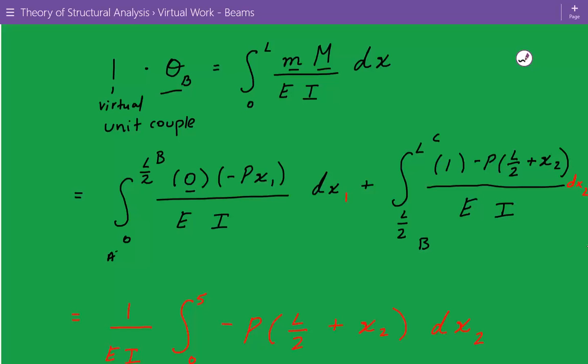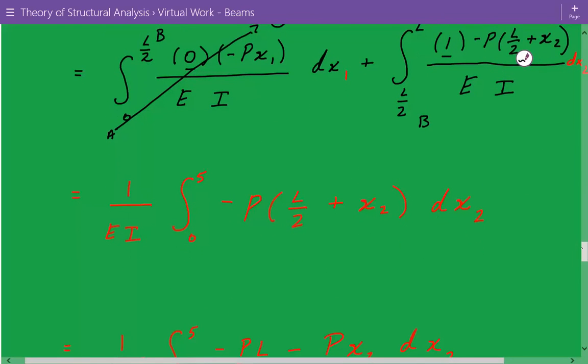So since we have two coordinate systems, we have to divide this integration up into two integrations. One from 0 to L over 2 and then the other one from L over 2 to L. So this is from A to B, and then the second integration is from B to C. So now let's take a look at the terms within the integral. The virtual moment function from A to B was 0. So automatically this whole integral will be 0. So we can cancel this out. So what we're left with is the integration from B to C. So we have the virtual moment function is 1. And then the real moment function is negative P times L over 2 plus X2. So this is what we have. And then we move the 1 over EI outside because it's constant. So we're left with 1 over EI times the integration of 0 to 5. And then negative P times L over 2 plus X2 and then DX2.